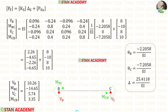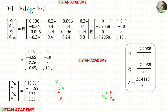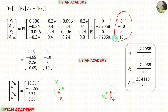Now let us find the final moments in beam BC. We apply the element stiffness matrix, using theta_B for M_BC and theta_C for M_CB, with 0 for other terms, and include the fixed end moments and reactions. After calculation, we obtain vertical reactions V_B, V_C, and moments M_BC and M_CB. M_BC has a negative value, meaning it acts in the anti-clockwise direction.